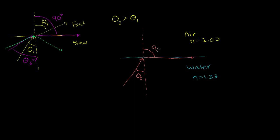So where this right over here is 90 degrees. If I have any incident angle less than this critical angle, I will escape. At that critical angle, I just kind of travel at the surface. Anything larger than that critical angle, I'll actually have total internal reflection. So let's break out Snell's law: we have the index of refraction of the water, 1.33, times the sine of our critical angle, equals the index of refraction of the air, which is just 1, times the sine of the refraction angle — so times the sine of 90 degrees.